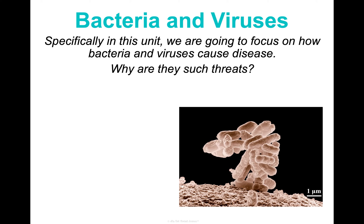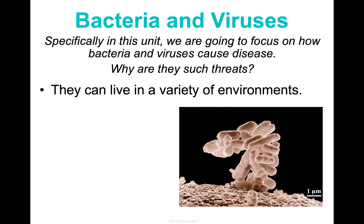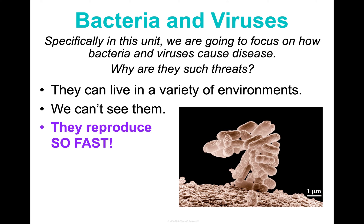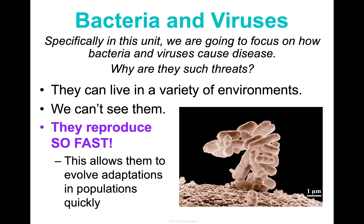Why are these two entities such threats to us? One is that they're able to live in a vast variety of environments, so they're all over. We also can't see them — unlike an environmental factor like cigarette smoke, which I can see and avoid, a bacterium or virus I can't see and can't necessarily avoid. But the main thing that's especially threatening is their ability to reproduce so rapidly. Because they reproduce so rapidly, they can evolve adaptations in populations very quickly — something we'll talk about in Concept 3 when we discuss how we treat bacterial and viral diseases.